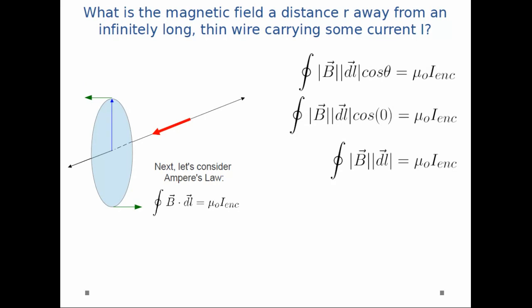Next, I can look at B at two different points on the circle. And I notice that since they're equidistant from the wire, every point on the circle is equidistant from the wire, the magnetic field must be the same. If the magnetic field is the same, we can pull it out of the integral.